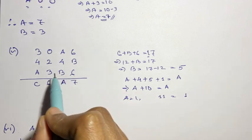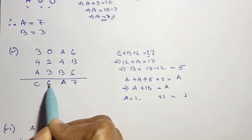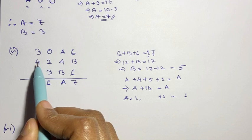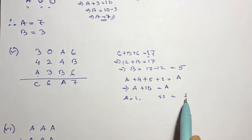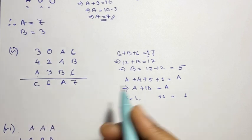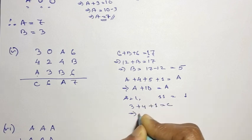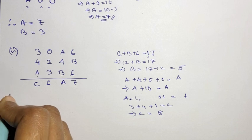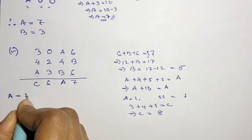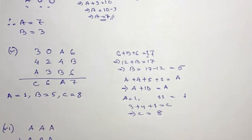Then what is this? 3 plus 2 means 5 and 7 is 6. So this is 3 plus 4, 3 plus 4 is 7, 7 plus a, I will have 1, so I will have c. 3 plus 4 plus a means 1 is equal to c, that means c equals 8. So I will have 1. So what is this? A equals 1, b equals 5 and c equals 8.